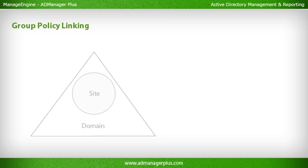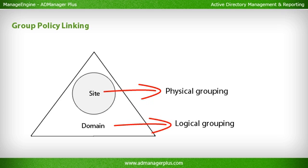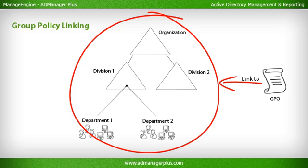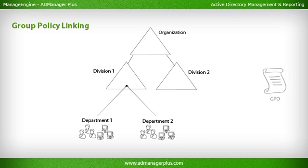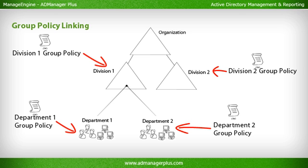Group Policy Linking — any Active Directory implementation will have, at the simplest, a domain and a site. While a domain is a logical grouping of objects pertaining to a specific area or function, the site is a physical grouping based on geographical location. Users and computers are often segregated into different domains or OUs based on departments or functions. A separate set of group policies can be created for each required domain or OU, and each GPO is linked to the corresponding domain or OU using the Group Policy Management Console.